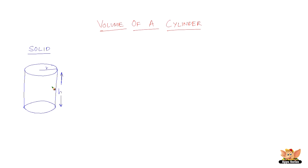How do you find the space occupied by the cylinder? We just need the area of the circular base here, and then multiply that with the height that it has. That is going to give us the volume of the cylinder. So the area of the circular base is nothing but pi r square, multiplied by the height — pi r square h.